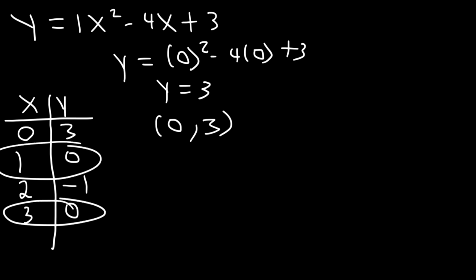Notice that these two are the same because they're equally distant from the vertex. So if we have the point (0, 3), then when x is 4, y must be 3 as well, because 0 and 4 are equally distant from the vertex.